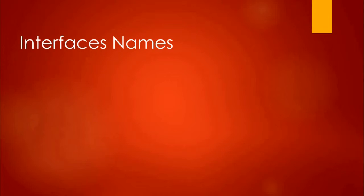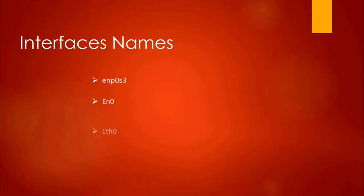Before we dive into configuration, I want to talk for a moment about device names. You will see mine here is enp0s3, which looks a bit like gibberish at first, but there is a story behind it. On other distros or platforms you might see en0, eth0, and eno1, or something else as the device name, indicating number zero or the first ethernet device.